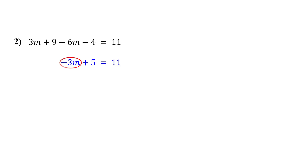So next, isolate the variable term. Notice that 5 is being added to negative 3m. So to isolate negative 3m, we do the opposite of addition — we subtract 5. And we subtract from both sides to keep the equation balanced. Now on the left, 5 minus 5 is 0 — they cancel out, leaving just negative 3m. On the right, 11 minus 5 gives us 6.